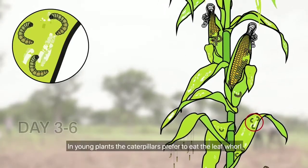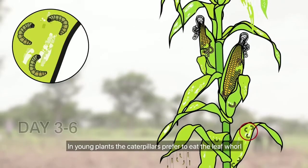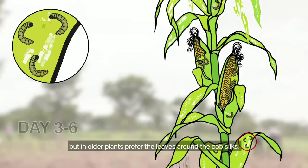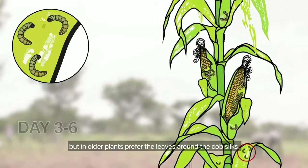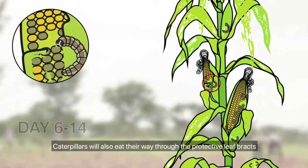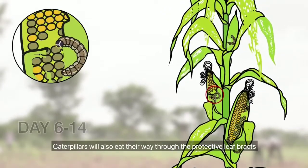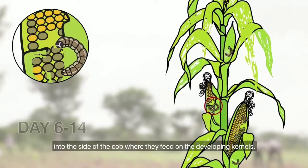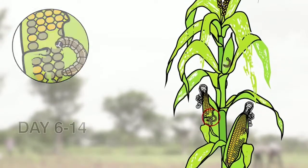In young plants, the caterpillars prefer to eat the leaf whorl, but in older plants prefer the leaves around the cob silks. Caterpillars will also eat their way through the protective leaf bracts into the side of the cob, where they feed on the developing kernels.